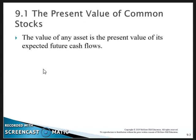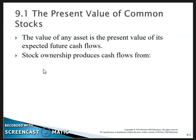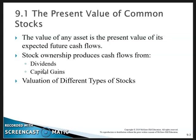Present value of common stocks: the value of any asset is the present value of its expected future cash flows. In the previous chapter on bonds, we had certain cash flows — we knew exactly what those cash flows were going to be and when they occur. That's not necessarily the case with a stock, so we estimate what those are going to be. Stock ownership produces cash flows from dividends and capital gains.